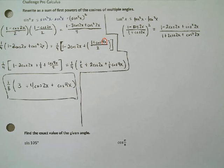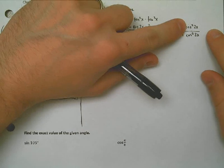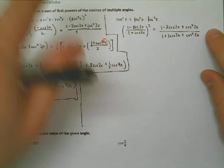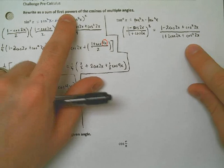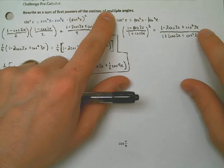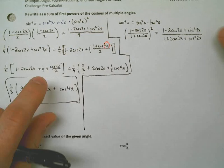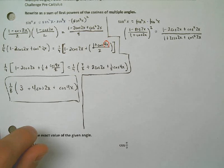Alright, so we're almost done, except that now we see once again we have cosine squared, and we're told that everything has to be first power. It's okay that it's cosines. It's okay that it's multiple angles, 2x's. That's what we expected, but we need to get rid of the squares here, which means replacing these with fractions again.